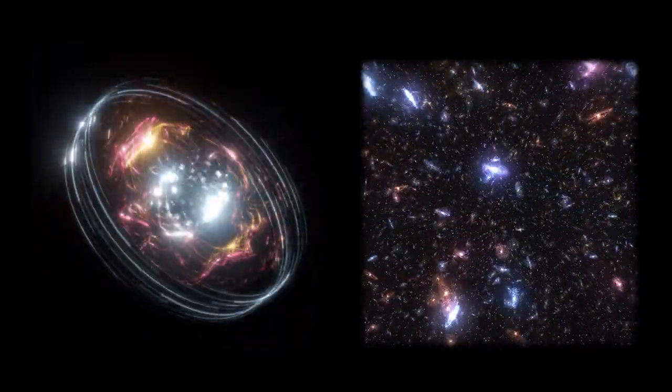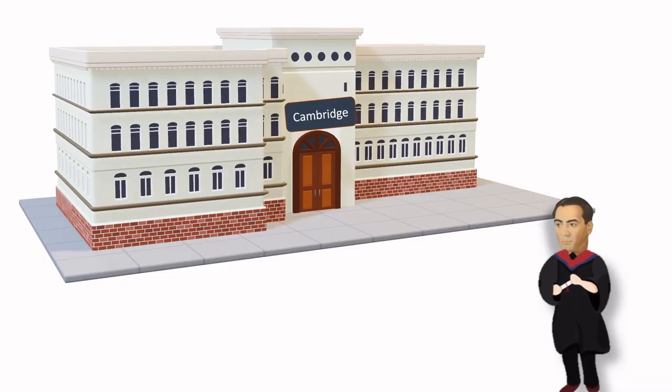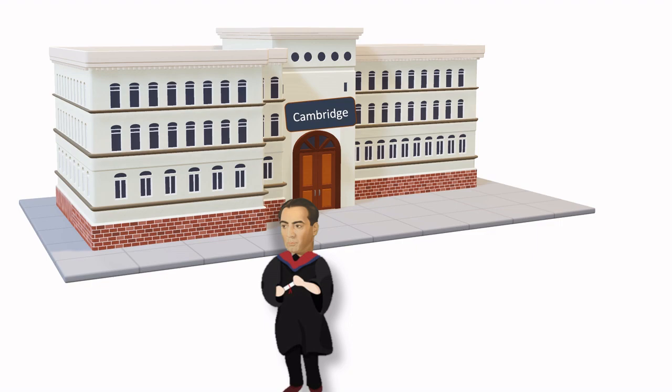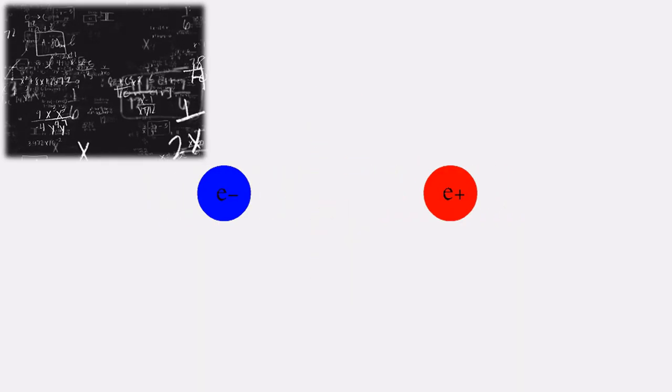He completed his doctorate degree in nuclear physics from the University of Cambridge in 1934. Talking about his discoveries, he performed the first calculation to determine the cross-section of electron-positron scattering.